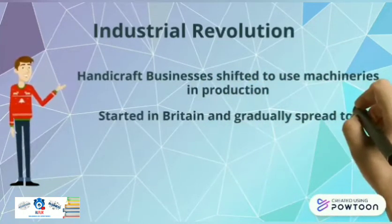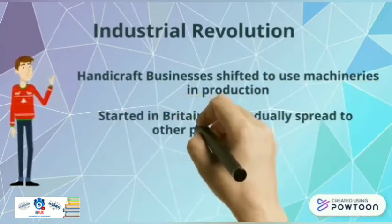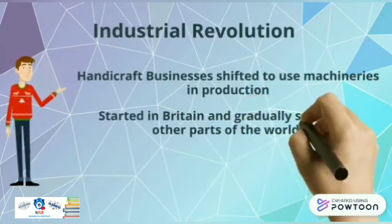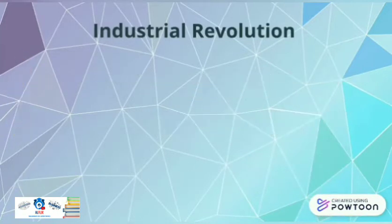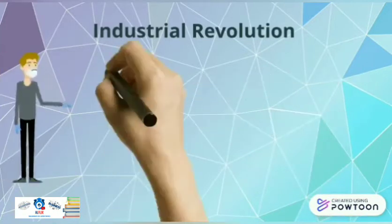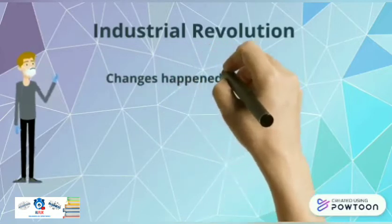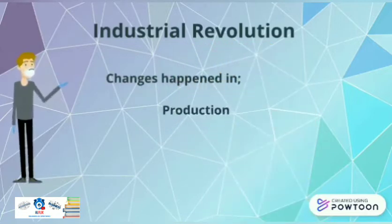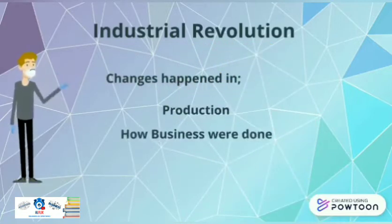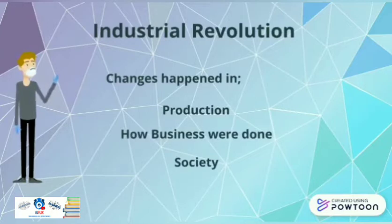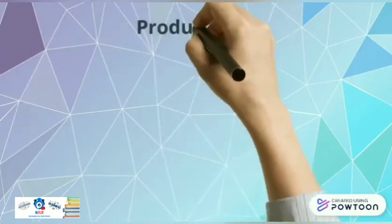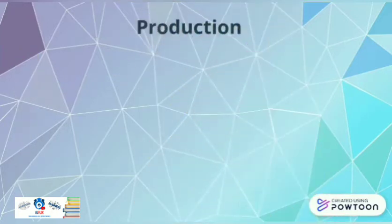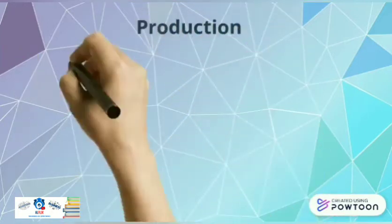The industrial revolution was initiated in Britain and then gradually spread to other parts of the world. With the industrial revolution, there were lots of changes in how production and business were done, and it also affected the society.